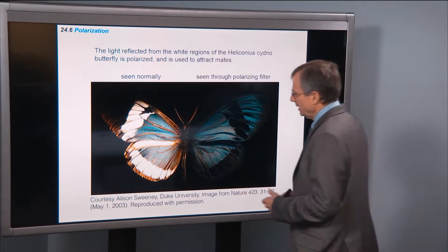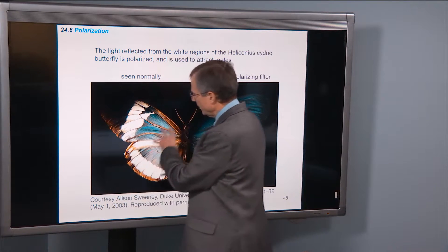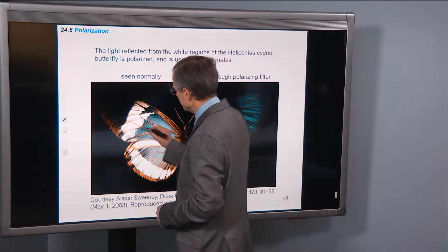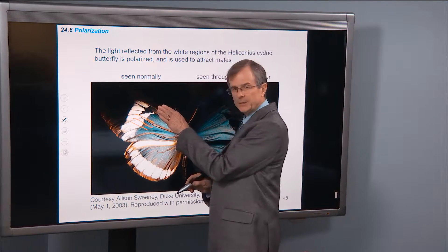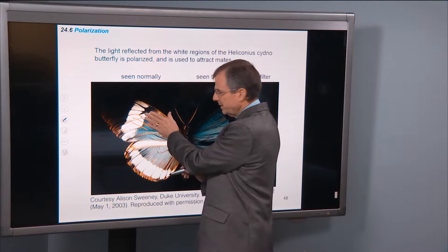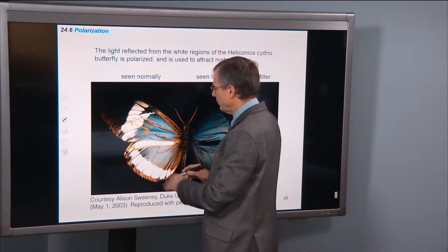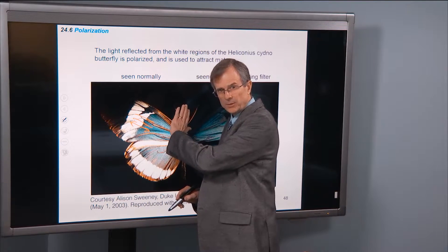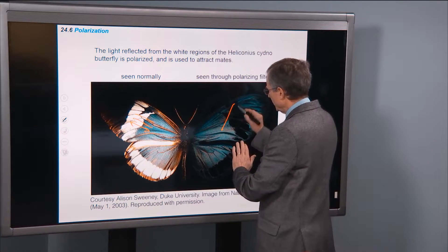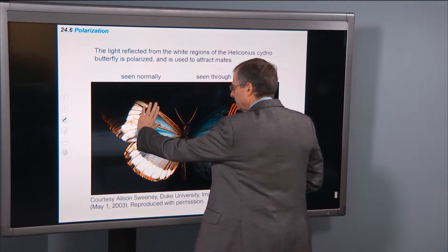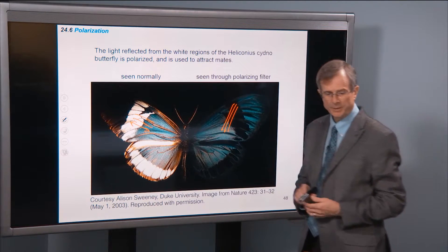So if the wings are polarized — the direction of polarization here — let's say that these wings are only sending out electric fields that point in this direction, either this direction or this direction. Then if you put a filter that blocks out all of that electric field, so the filter would be oriented this way, blocking out that polarized light, then you don't see the wing very well.